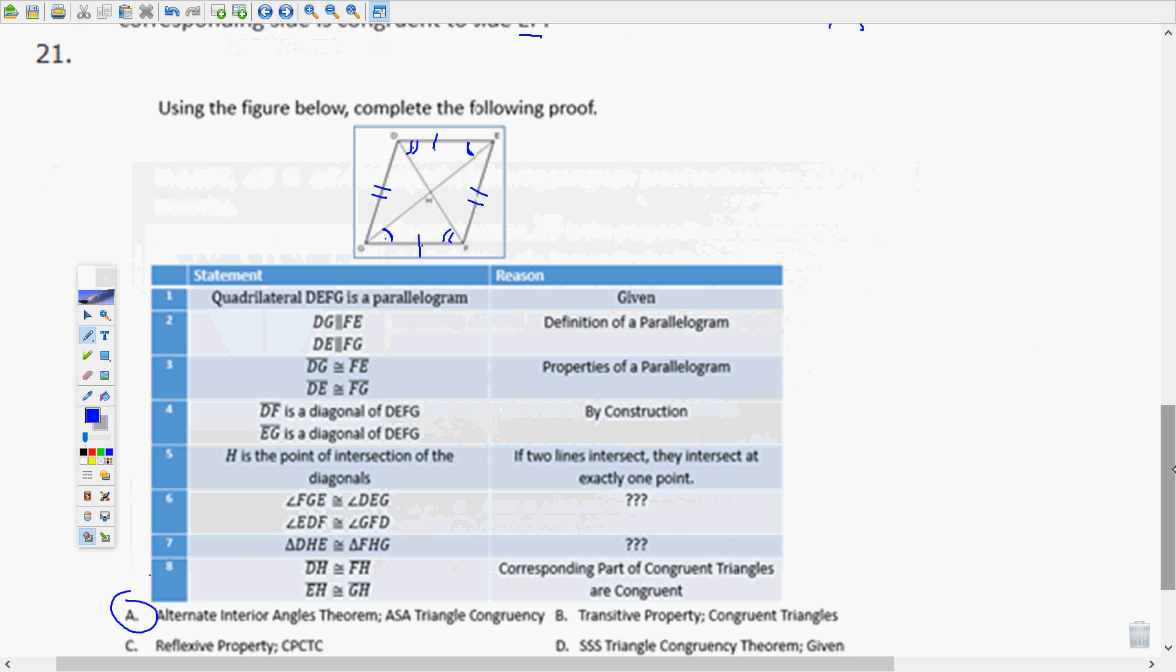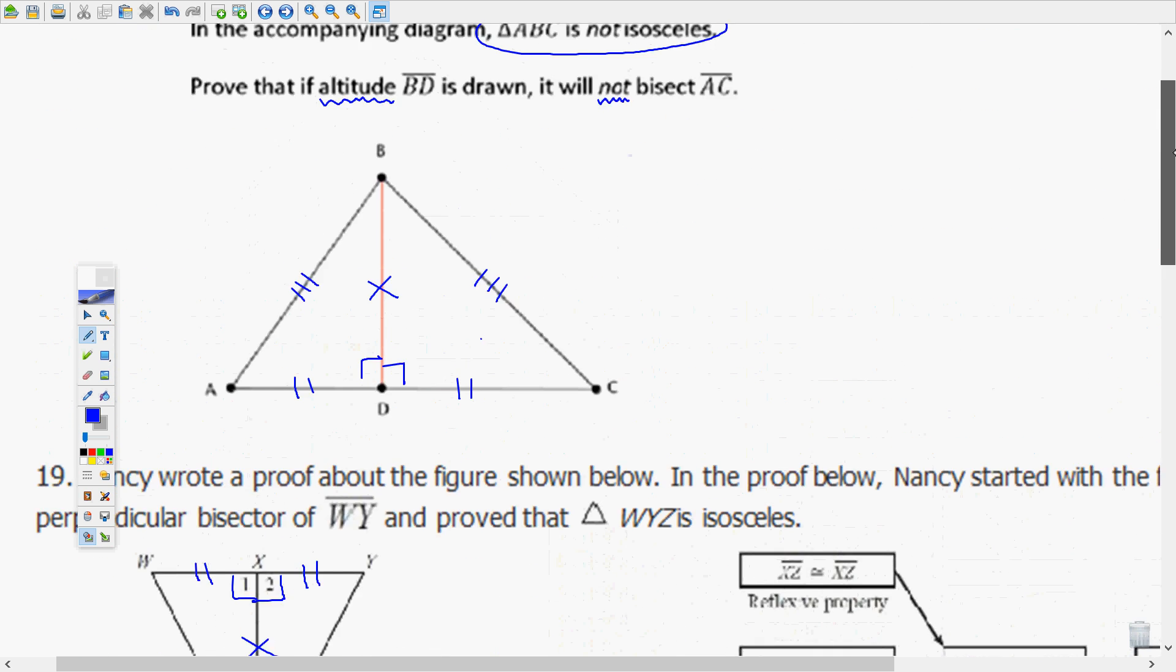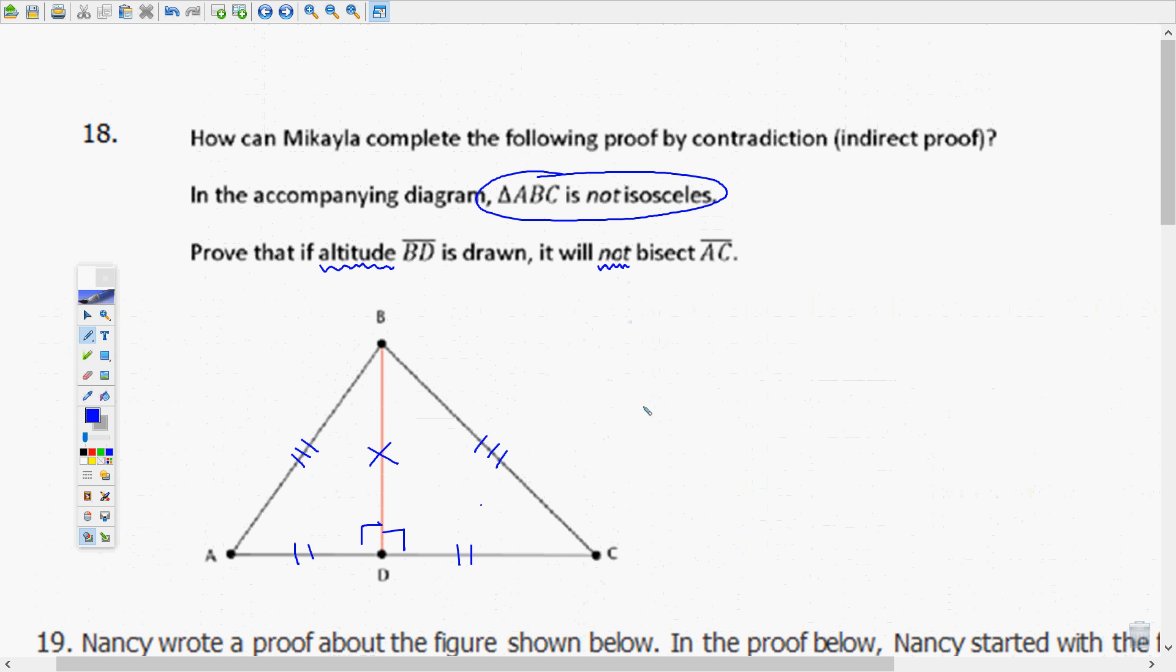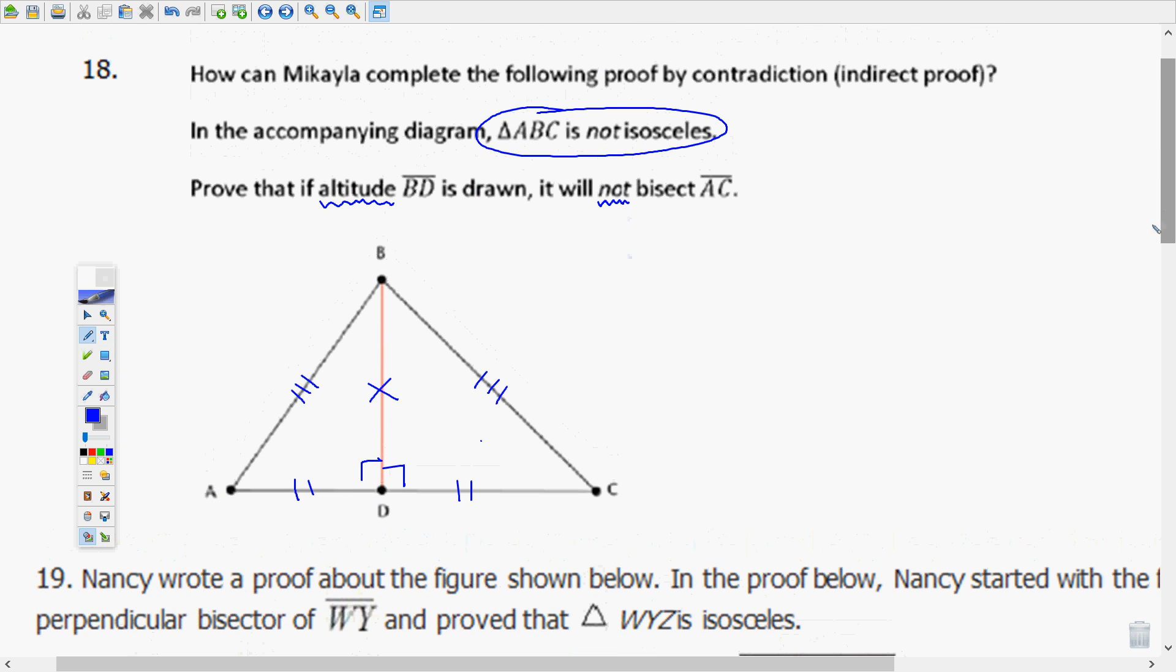OK, let's go to 18. I'm going to try to talk fast here. You can stop and rewind if you need to. I need to get this pretty quick. Number 18, how can Michaela complete this proof by contradiction or indirect proof? In the accompanying diagram triangle ABC is not isosceles. Prove that if altitude BD is drawn, it will not bisect AC.